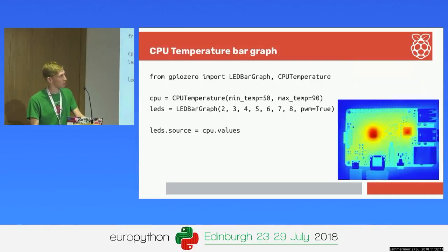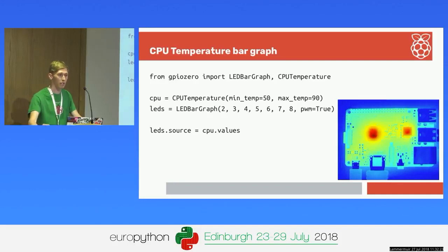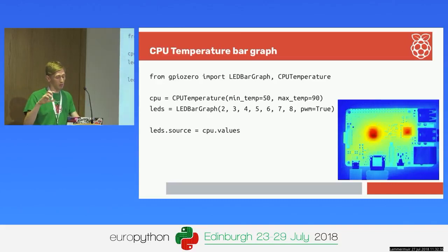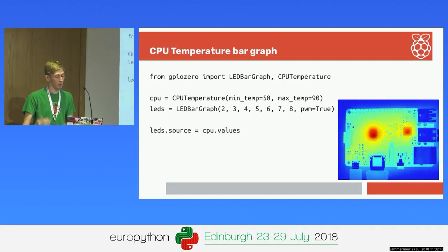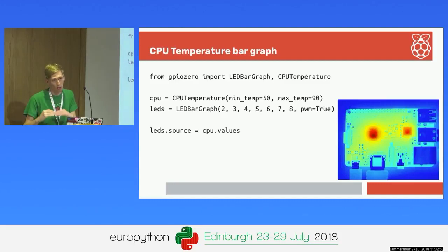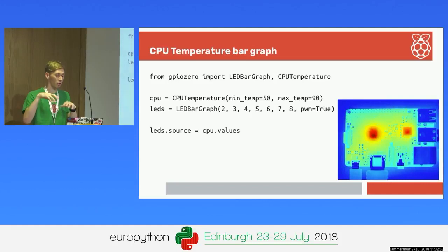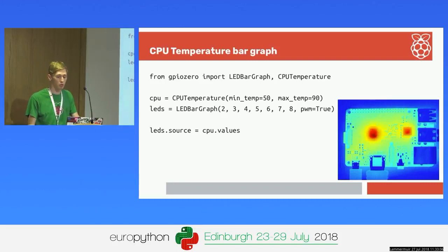Another internal device is CPU temperature - you can read the temperature of the Raspberry Pi itself. We also have LED bar graph, where you have a series of LEDs in a row acting like a bar graph that can only go from one end up to the other. If you have 10 LEDs in a row and pass in the value 0.5, it lights up half the LEDs. You can set the LED bar graph's source to CPU temperature so the LEDs always represent the current CPU temperature of the Pi, letting you visualize the temperature rising as you run applications on the device.